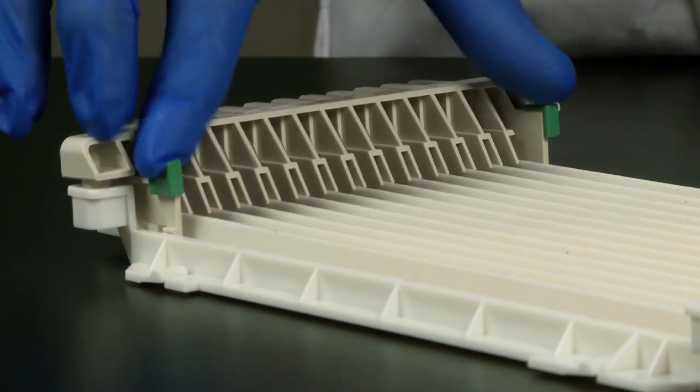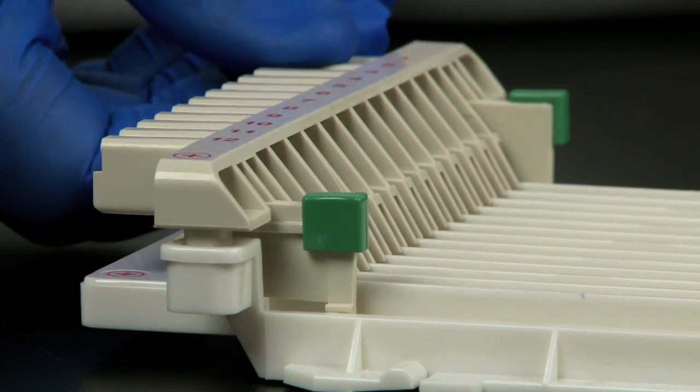Press the electrode assembly straight down into the tray by pressing on the green tabs until you hear a click.